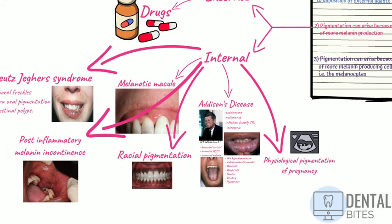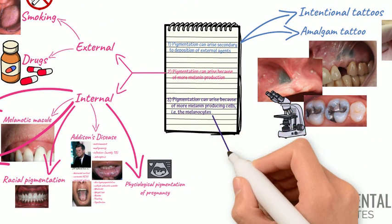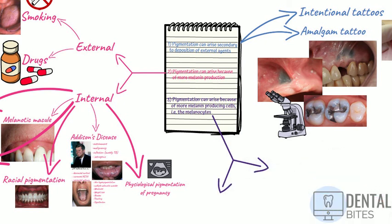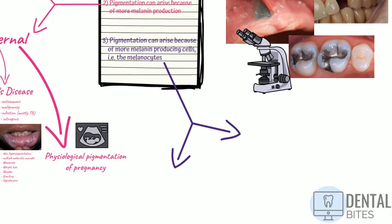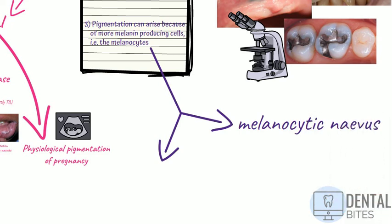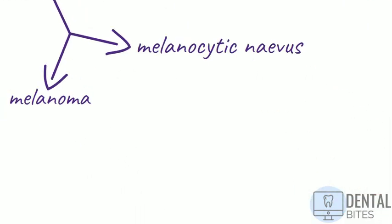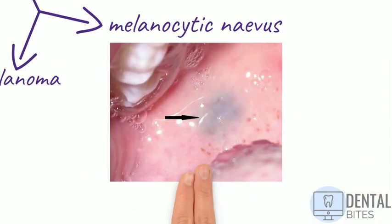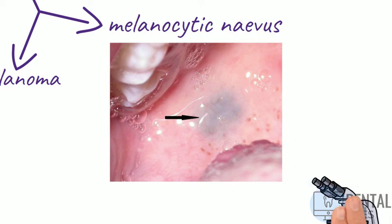Moving on to our third category for causes of pigmentation: increased number of melanocytes. We'll discuss two examples - melanocytic nevus and melanoma. Melanocytic nevi are a benign proliferation of melanocytes. They look like small brown or blue moles, as you can see here. Because it's often impossible to differentiate them from other pigmented lesions like melanoma, for example...